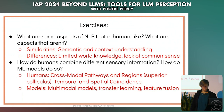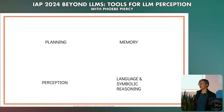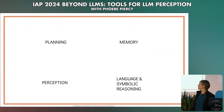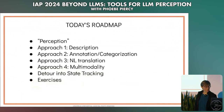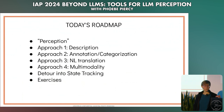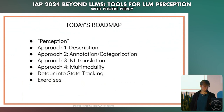We're going to talk more about that today. Just to ground us in where we are in the series: the first week was planning, the second week was memory, this week is perception, and next week is going to be language and symbolic reasoning. Today's roadmap: we'll briefly go over perception using Jeremy's definitions, go through different approaches to equipping an LLM to perceive the world, take a brief detour into state tracking, and then do some exercises.